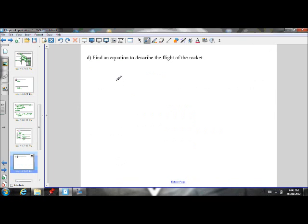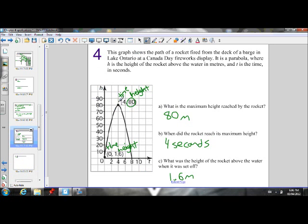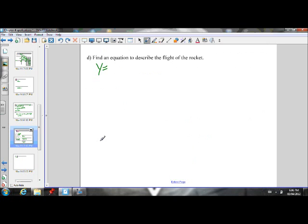Part D, find an equation to describe the flight of the rocket in order to write the equation in vertex form. We know this is a vertex form question because we have the vertex and another point. So we're going to write it in vertex form.